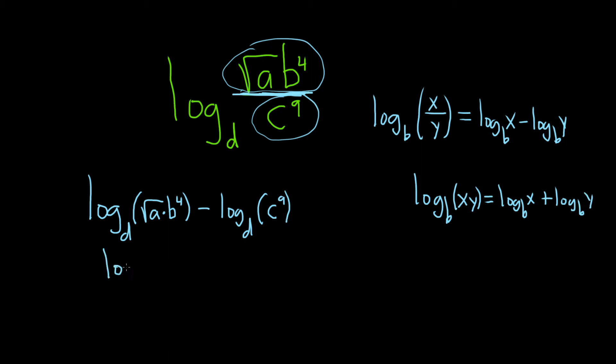Here this will become log base d of the square root of a. I'm going to go ahead and write the square root of a as a to the 1/2 plus log base d of b to the 4th. And then we still have minus log base d of c to the 9th power.